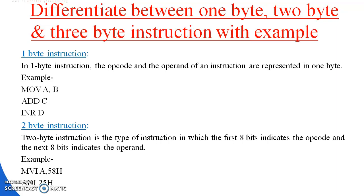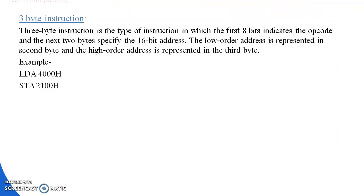Next are 3-byte instructions. A 3-byte instruction includes the first 8 bits as the opcode and the remaining 16 bits as the address. The low-order address is represented in the second byte and the high-order address is represented in the third byte. For example: LDA 4000H, STA 2100H — these are 3-byte instructions.